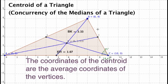You can do the same thing with the y's. 4 plus 0 plus 0 is 4. Divide that by 3, you get 1 and a third, which is the y-coordinate. So the coordinates of the centroid are the average coordinates of the vertices.